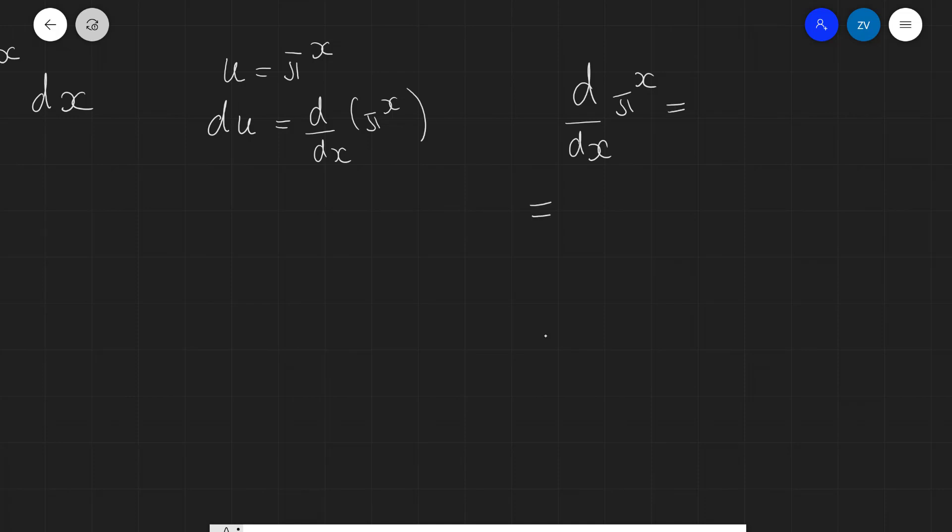We're going to need to use a trick here once again. So I'm just going to represent that as e to the natural log of π^x. Now, using the properties of the logarithmic function, I can say that this is equal to e raised to the power of x ln of π.